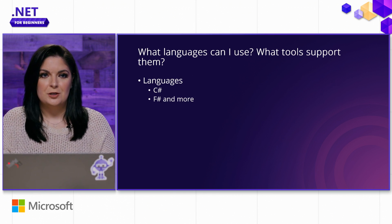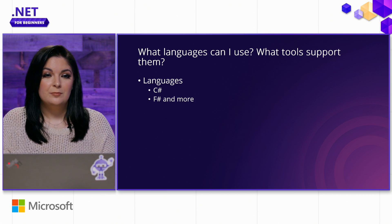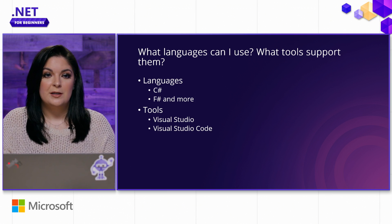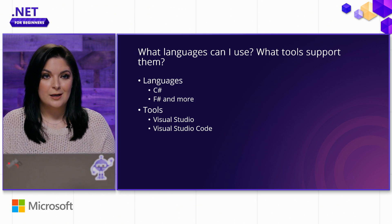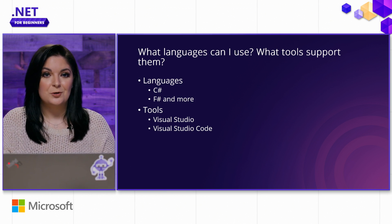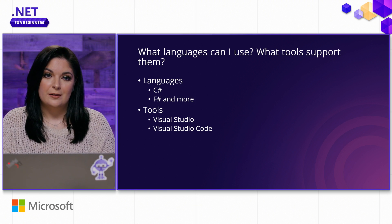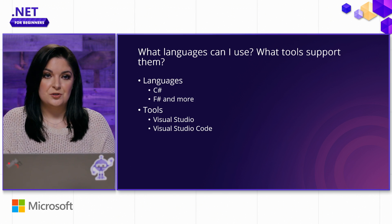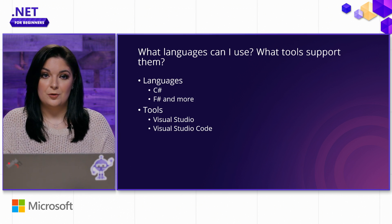What languages and tools can you use? .NET supports C#, F#, and more. As far as tools go, you can use your favorite IDE such as Visual Studio or Visual Studio Code. Since F# is the functional programming language and C# is the object-oriented programming language, we recommend you start off with C# and Visual Studio Code. If you keep watching, I'll be showing you how to get started with both of those.